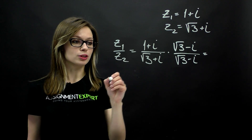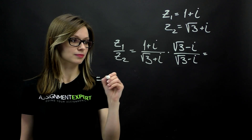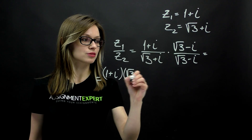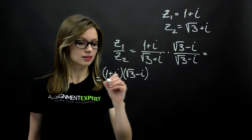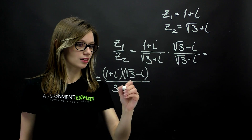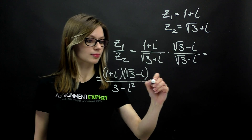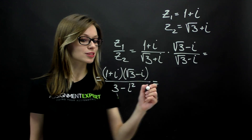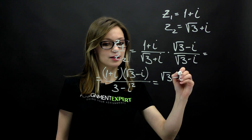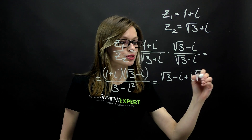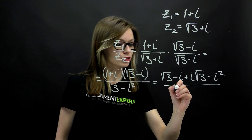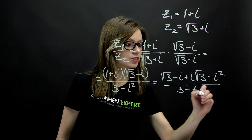That gives us the following: 1 plus i times square root of 3 minus i, over square root of 3 squared, which is 3, minus i squared. Opening the parentheses in the numerator, we'll have square root of 3 minus i plus i times square root of 3 minus i squared, over 3 minus negative 1.